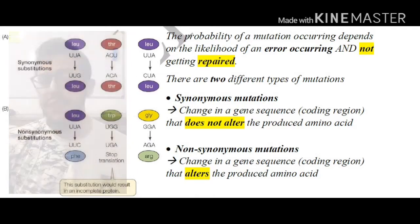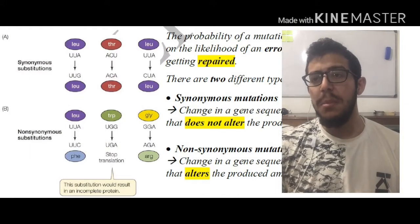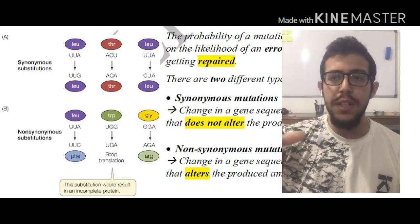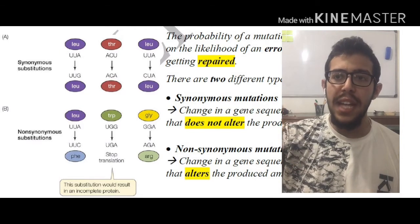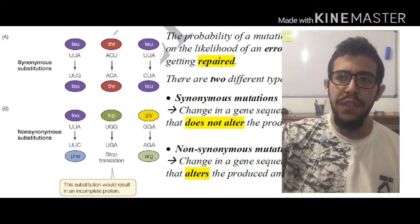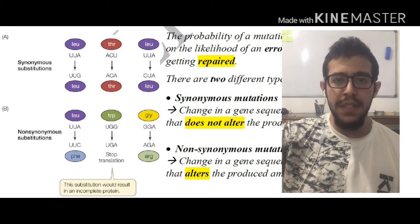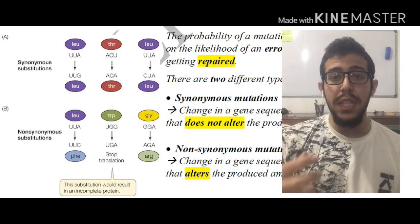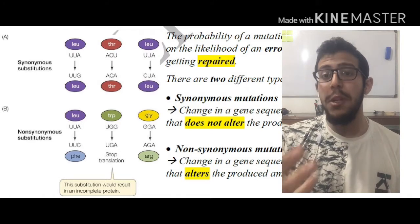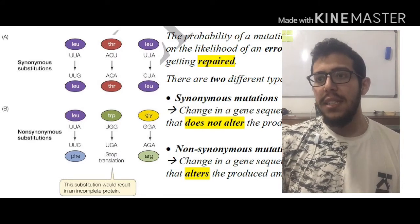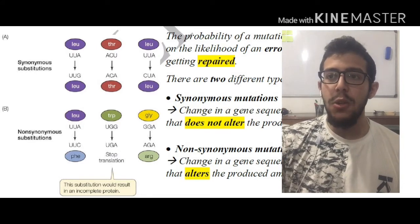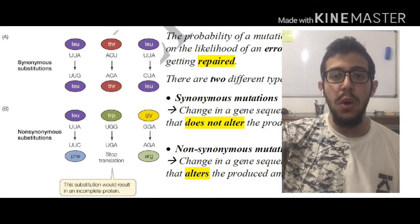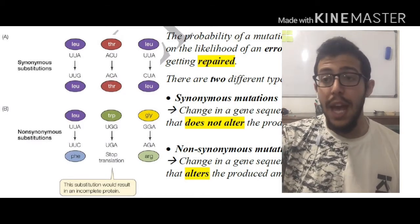Looking at the image to the left of the screen, we have synonymous substitutions where leucine undergoes a change in the third nucleotide — adenine changing to guanine. However, leucine is coded by both of these codons, so the amino acid has not been altered. The same thing goes for threonine: ACU and ACA both code for threonine, so again the amino acid remains the same.